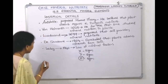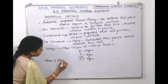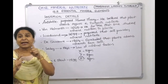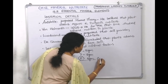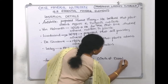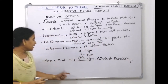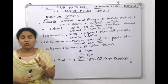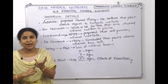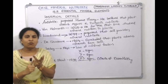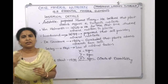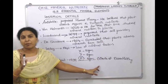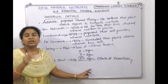The next scientists are Arnon and Stout. In the year 1939, Arnon and Stout proposed the criteria of essentiality. Just like there are eligibility criteria to write the NEET exam — you must have passed 12th with physics, chemistry, and biology at minimum 50% — similarly, for an element to be called essential, there are criteria. Arnon and Stout proposed three points in 1939.